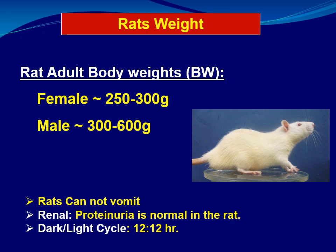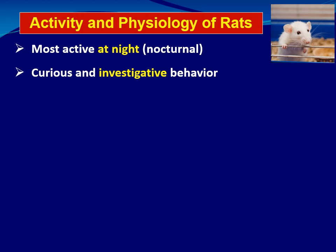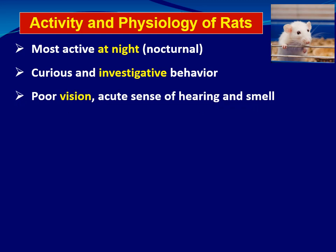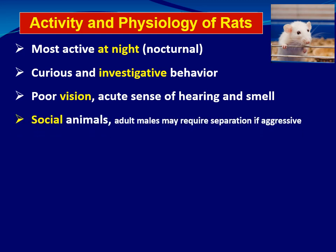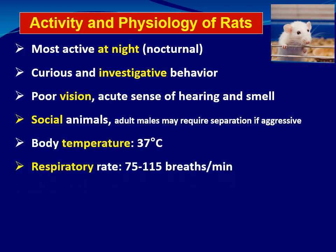Remember that rats cannot vomit — there is no vomiting center in rats. Proteinuria is normal in rats. The dark-light cycle is 12 to 12 hours. Rats are most active at night — they have nocturnal activity — and show curious, investigative, and exploratory behavior. They have poor vision but an acute sense of hearing and smell. Rats are social animals, but adult males, which are aggressive, should be separated. Body temperature is similar to humans at 37 degrees Celsius, and respiratory rate is higher than humans at 75 to 115 breaths per minute.